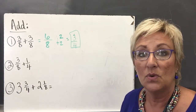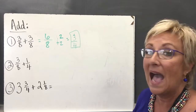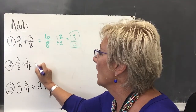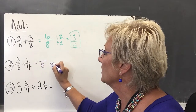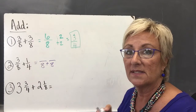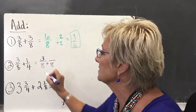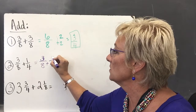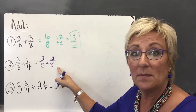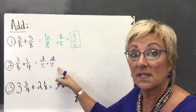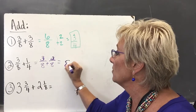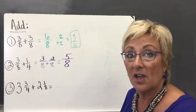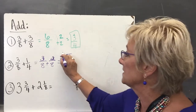Now for number 2 — I've got two fractions but they don't have the same common denominator. I have to find the least common multiple of 8 and 4, which is 8. I write 8 as the denominator for both. I don't have to change 3/8 because it already has denominator 8. For 1/4, I know 4 goes into 8 two times, so 2 times 1 is 2 — giving me 2/8. I've just renamed 1/4 without changing its value. Now 3 plus 2 gives me 5, so the answer is 5/8, which is already in simplest form.